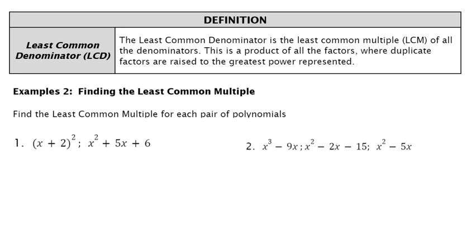Now we're going to formally define the common denominator because we need it when adding fractions with different denominators — like we would with numbers. If I had something like 2 fifths plus 3 sixths, we'd have to get them to be the same on the bottom to add across. With rationals, we're going to factor and use those factors to find the smallest or least common denominator we can find, because we don't want to use extra factors if we don't have to. So the next example will practice how to find the least common multiple, which is what we'll use as the least common denominator.